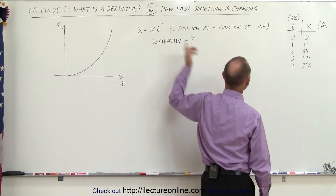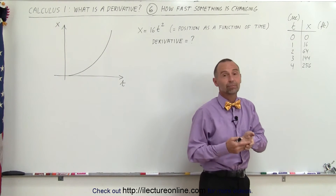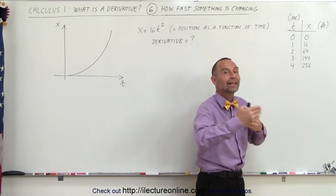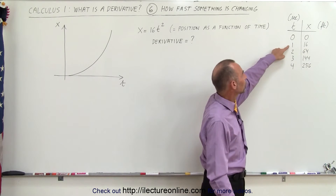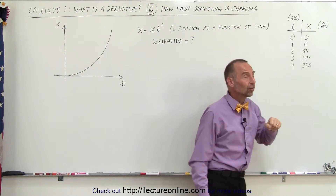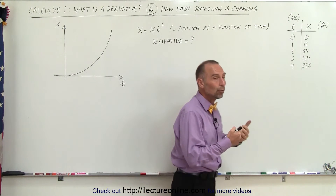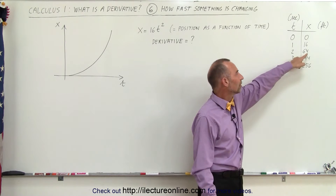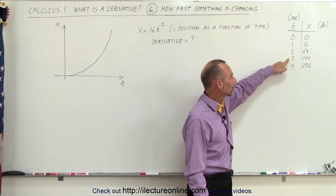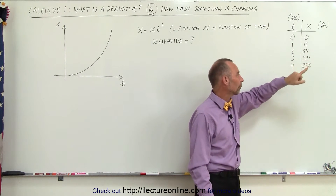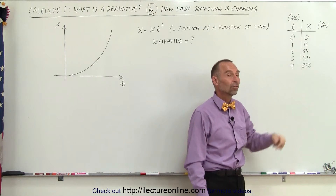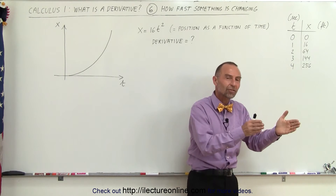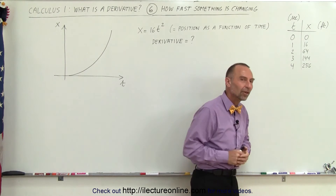When t is equal to 0, x equals 0 — we haven't gotten anywhere yet. When time is equal to 1, x is now 16, so after 1 second we've moved 16 feet. After 2 seconds, we've moved 64 feet. After 3 seconds, 144 feet. After 4 seconds, 256 feet. You can see that you cover more and more distance every subsequent second.